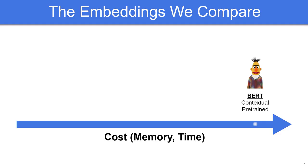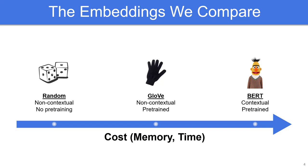We compare BERT to two types of non-contextual embeddings that are much more computationally and memory efficient. The first type we compare with is GloVe, which is a classic example of a non-contextual word embedding method. Using GloVe embeddings requires storing a vector for each word in the vocabulary, which can be relatively expensive for large vocabularies. We also compare with an even simpler baseline, fully random embeddings, in which we simply map each word to a vector of random floating-point numbers.